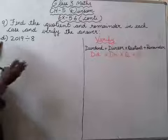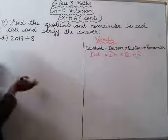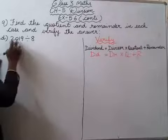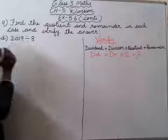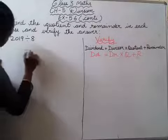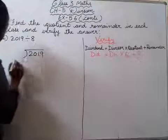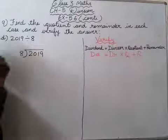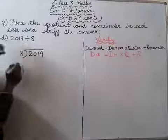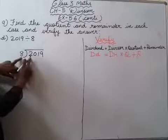I am not going to do that. So, 2019 divided by 8. You have to divide. 2019 divided by 8. So first you have to check the first number — 2. Yahaan 2 hai aur yahaan 8 hai.